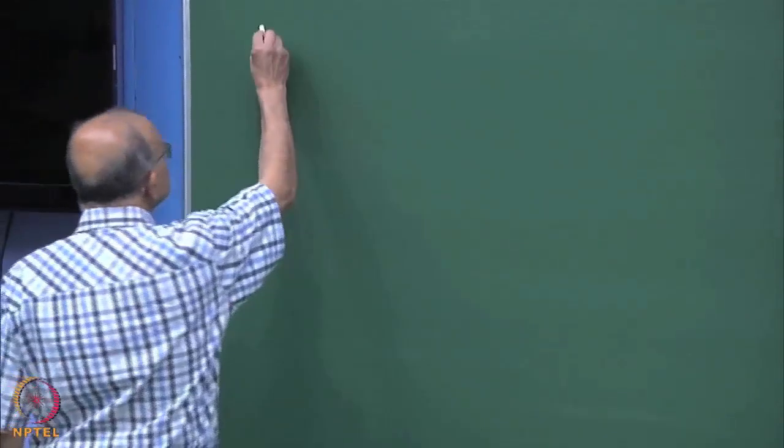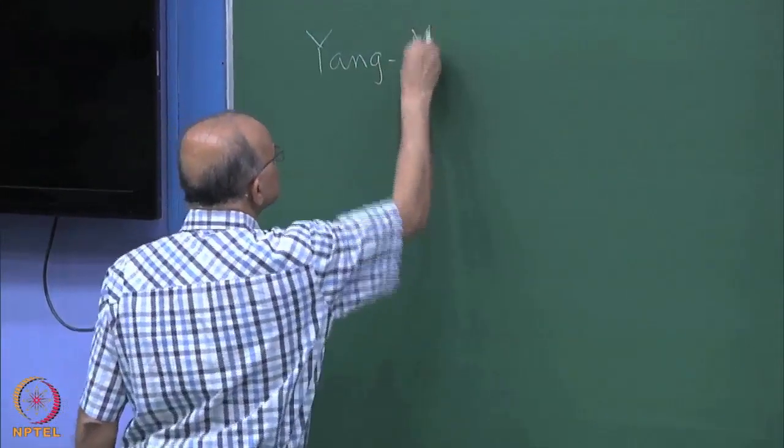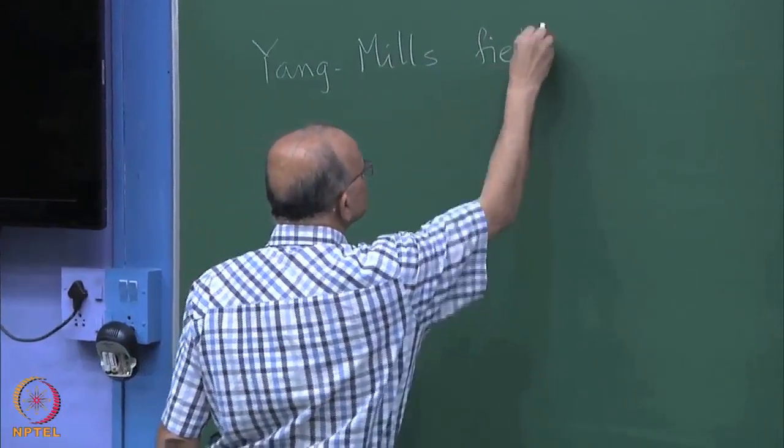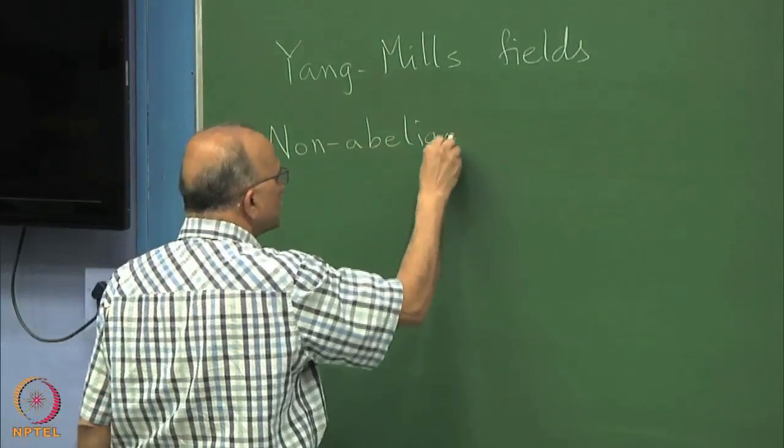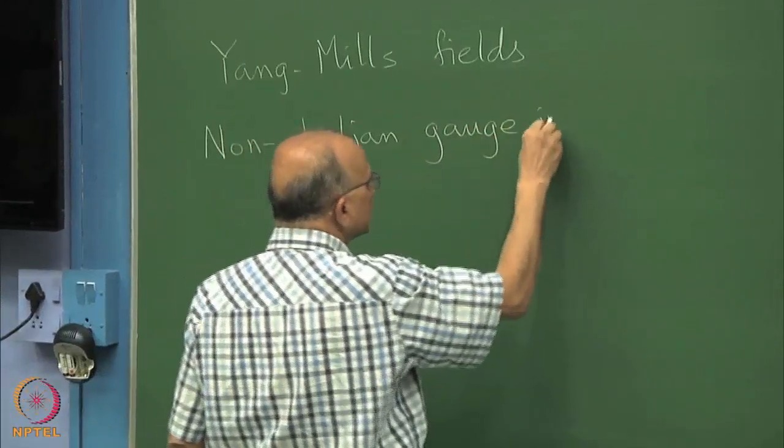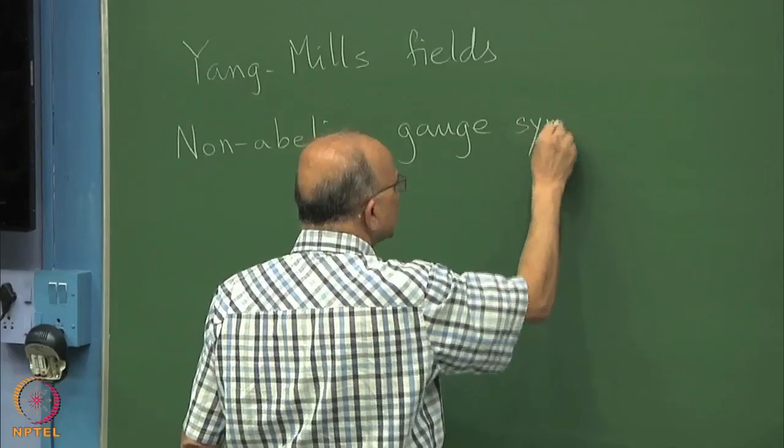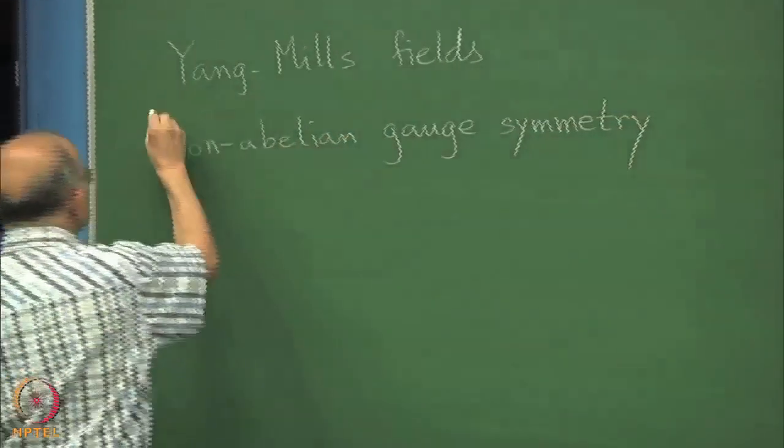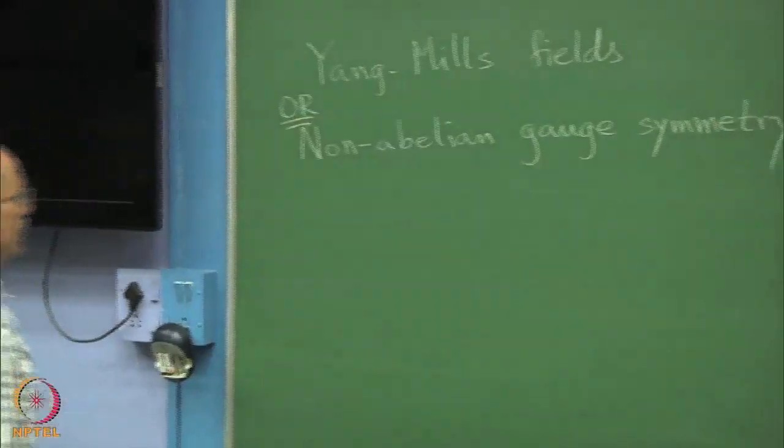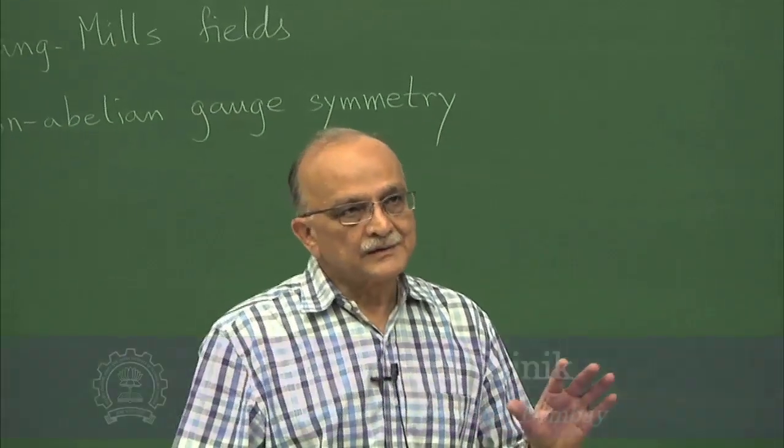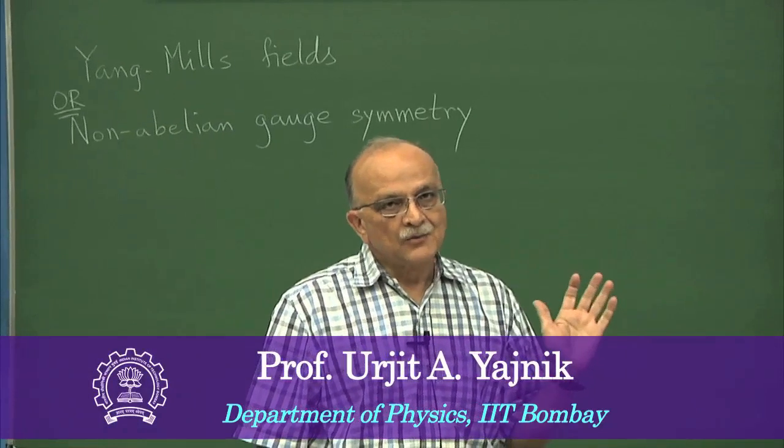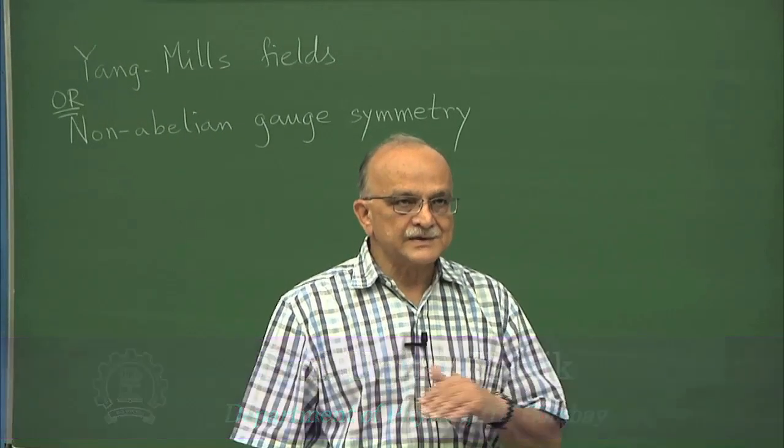Today, we begin with the topic of Yang-Mills fields because these have become the cornerstone of all of modern physics. In other words, this topic is called non-Abelian gauge symmetry. What is interesting about this concept is that all the particle physics we know is very elegantly described in terms of this principle. What it does is that it makes all couplings universal.